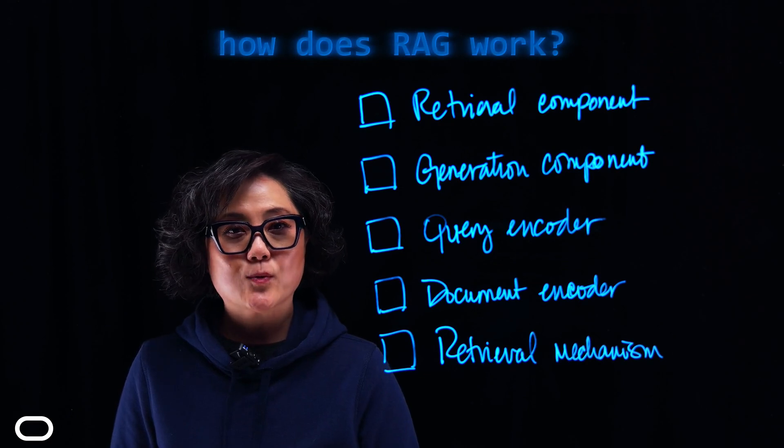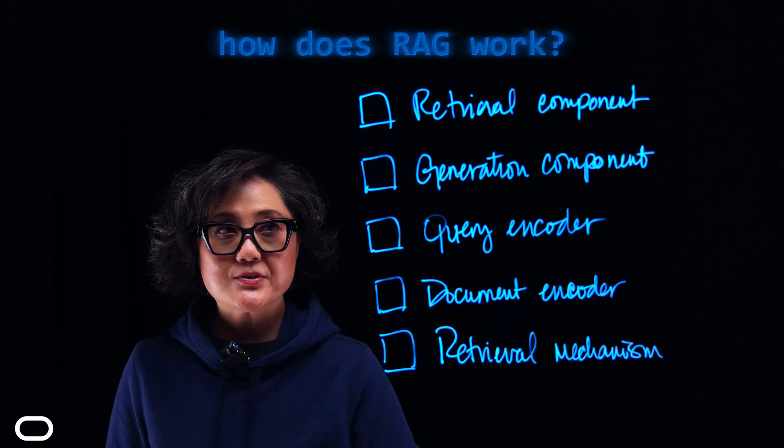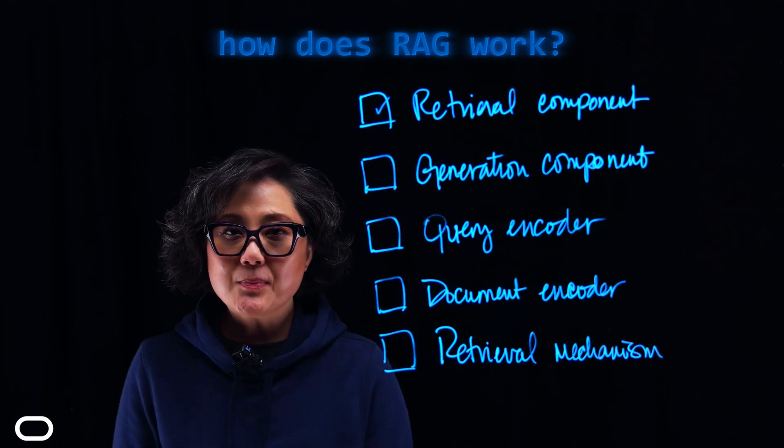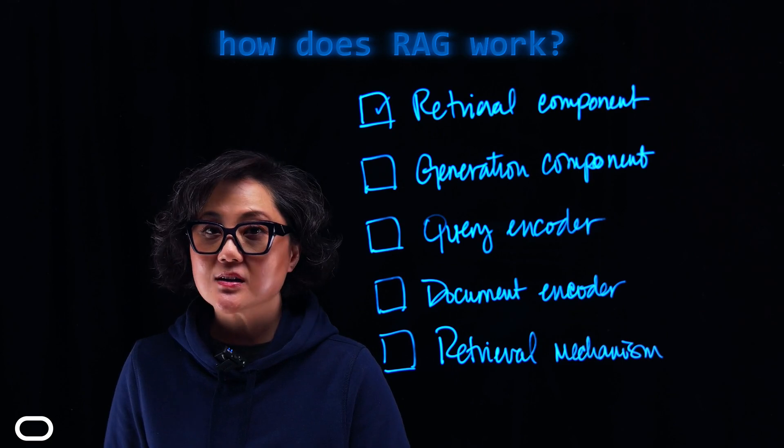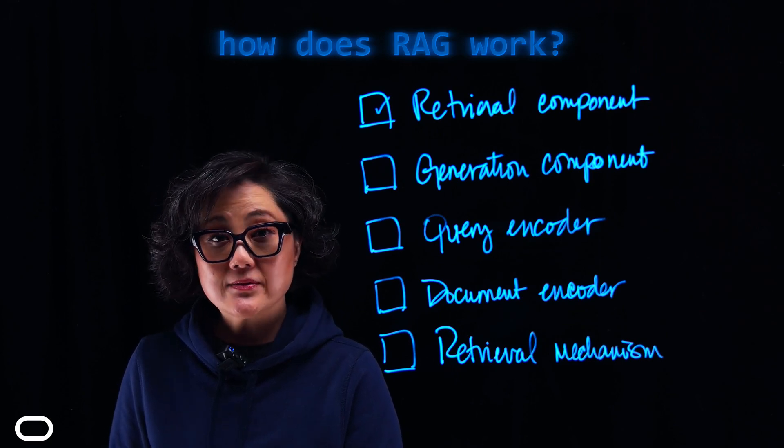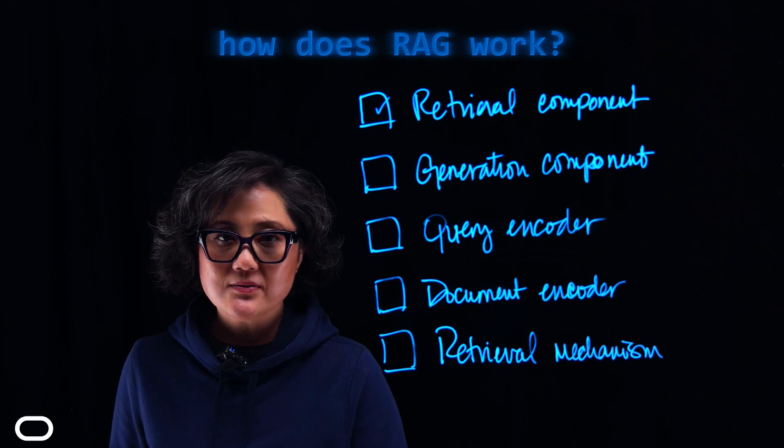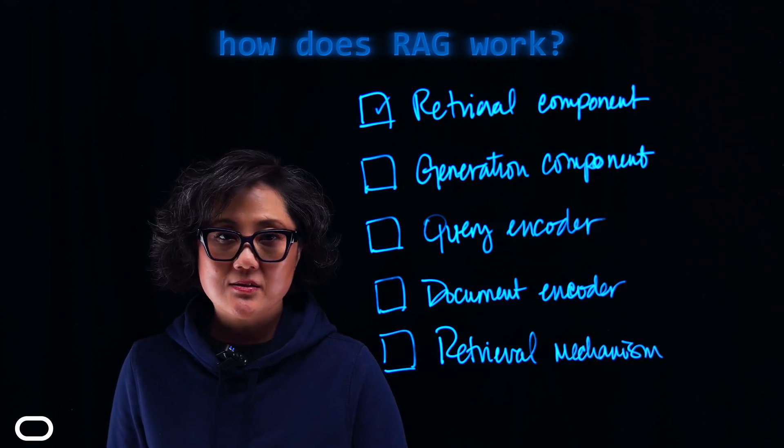Let's break down how RAG works. First, we have the retrieval component. This part of the model searches through a large collection of indexed or chunked documents, or even a database, to find the most relevant pieces of information based on the input query.